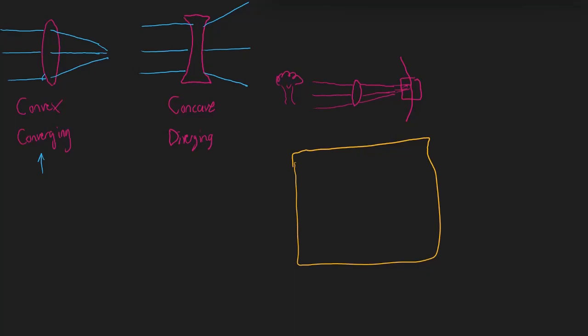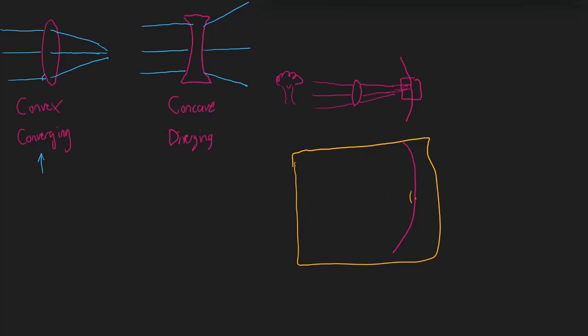Either the light rays are being focused too close — the focus is happening here when it should be happening at the retina, so there's a gap — or the light is not being focused enough, in which case the light will reach the retina but not be focused enough, meaning the focal point is actually happening behind the retina.